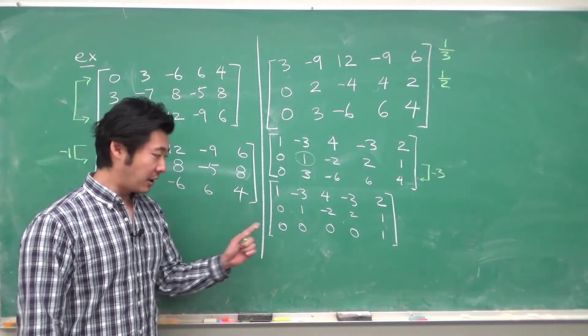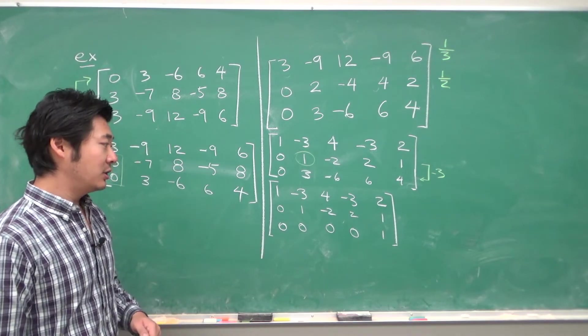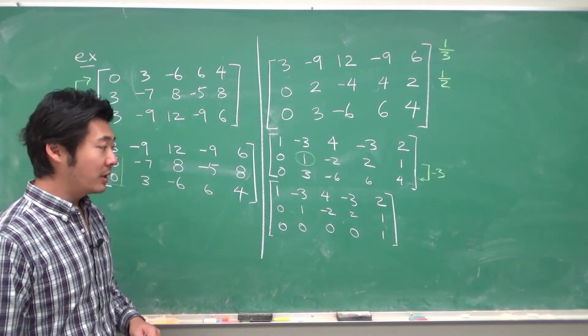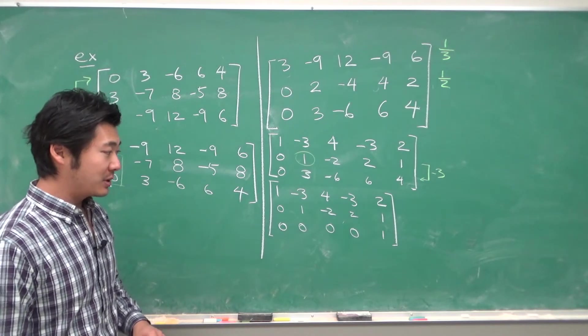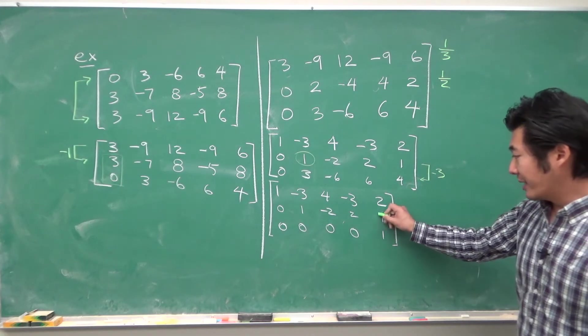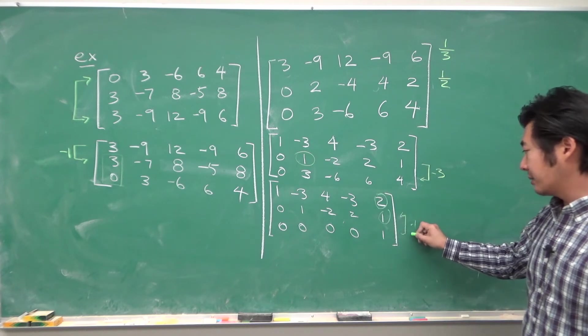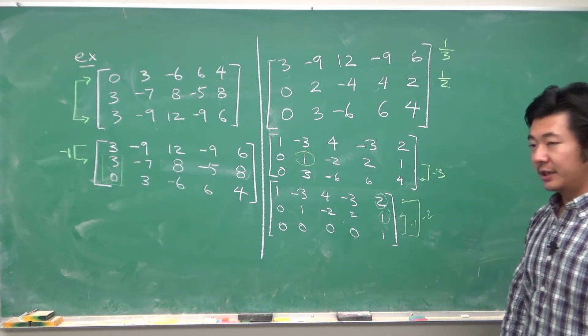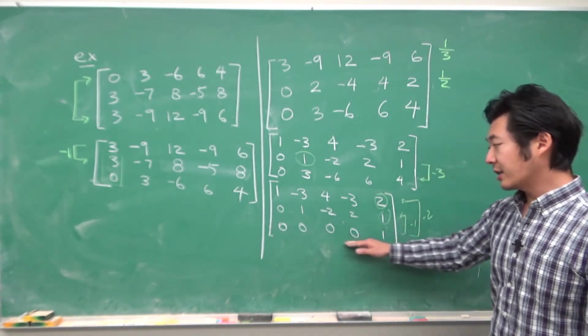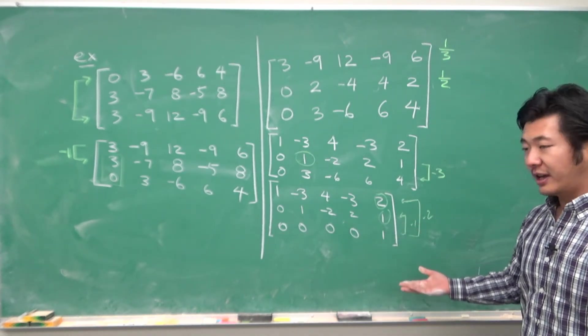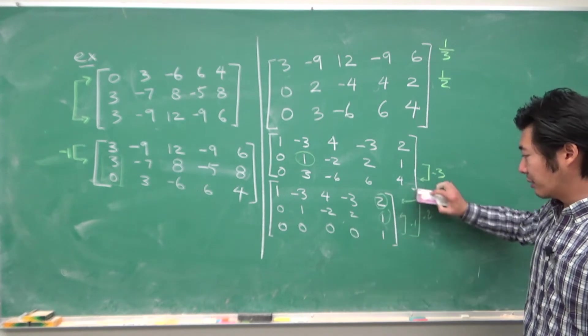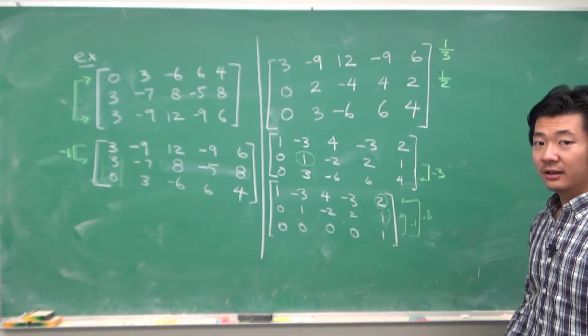So, now this is already in echelon form. We can bring it into reduced row echelon form by repeating the steps. So, we want to get rid of these two entries. So, we can add minus 1 and minus 2 to here. But notice that because this last column is all zeros, nothing really happens to the other entry. So, we can get rid of these for free.